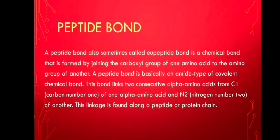What is a peptide bond? A peptide bond, also sometimes called an upeptide bond, is a chemical bond that is formed by joining the carboxyl group of one amino acid to the amino group of another. A peptide bond is basically an amide type of covalent chemical bond. This bond links two consecutive alpha amino acids from C1, carbon number one, of one alpha amino acid, and nitrogen number two of another. This linkage is found along a peptide or protein chain.